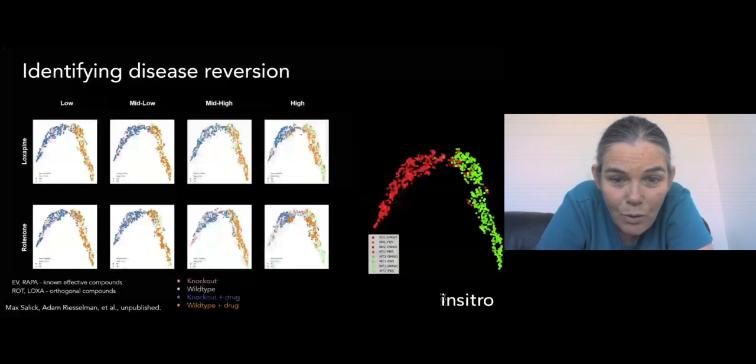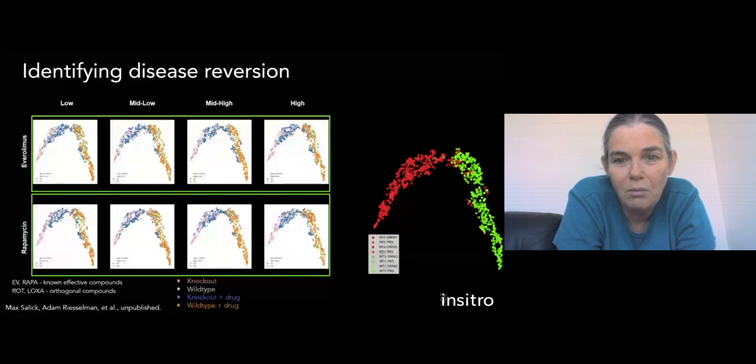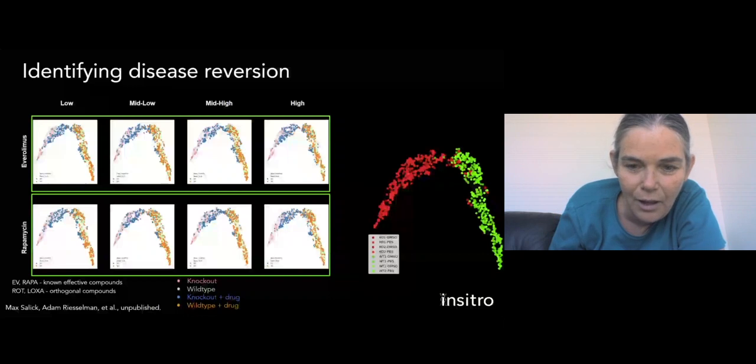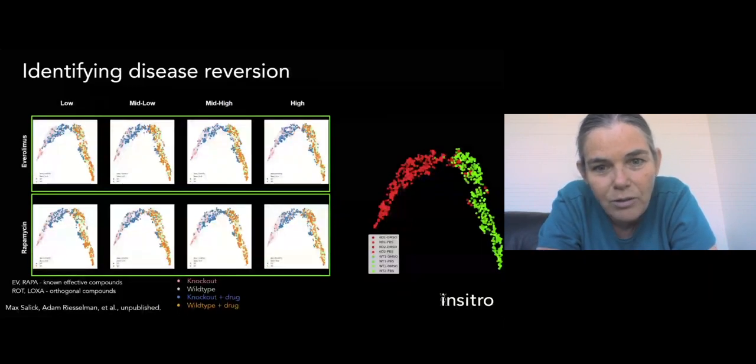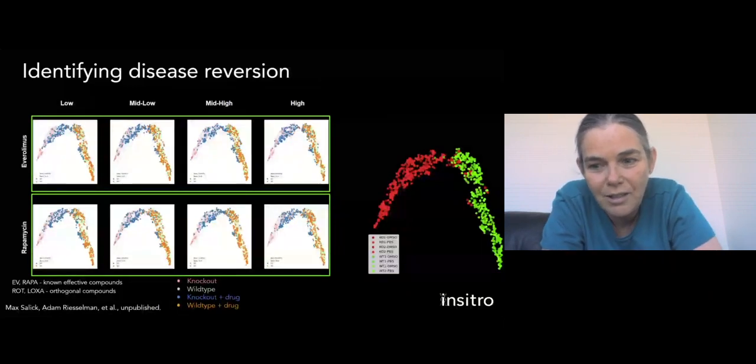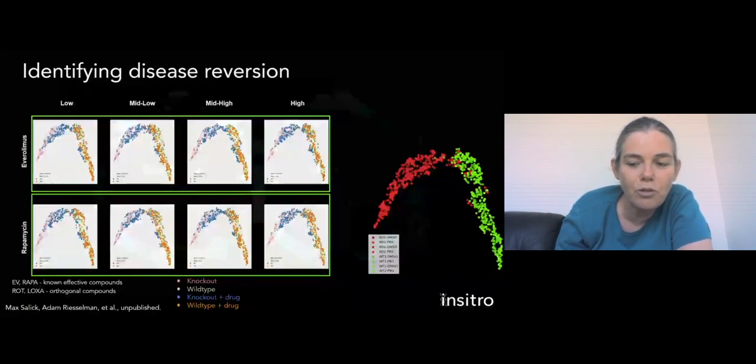Whereas when we look at the two compounds that are known to be treatments for the disease, there is a significant shift towards the healthy state. So we can compare from here to here. We can see that there are more cells that were knockouts that were moving towards the healthy state. So this is an illustration that you could actually identify these intervening compounds using the kinds of generic assays that we put in place here.